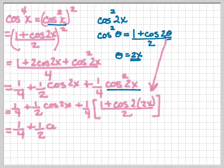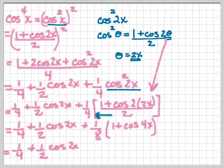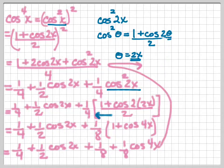And this is 1 fourth plus 1 half cosine 2x plus 1 eighth, I'm just using what I know about moving the 2 to the outside, 1 plus cosine 4x. So it's 1 fourth plus 1 half cosine 2x plus 1 eighth, I'm going to distribute my 1 eighth. 1 eighth times 1 is 1 eighth, and 1 eighth times cosine 4x is 1 eighth cosine 4x. Moving it on up here, I'm going to run in a different color so it's easier to see: 1 fourth plus 1 eighth is 3 eighths, plus 1 half cosine 2x plus 1 eighth cosine 4x.